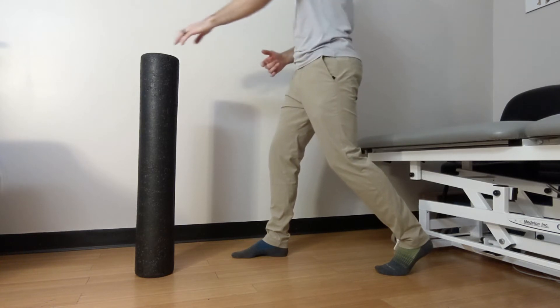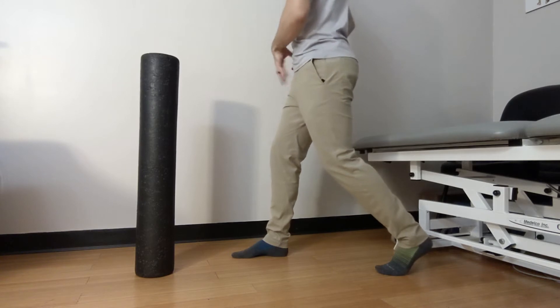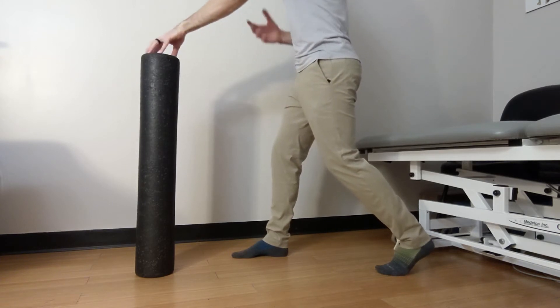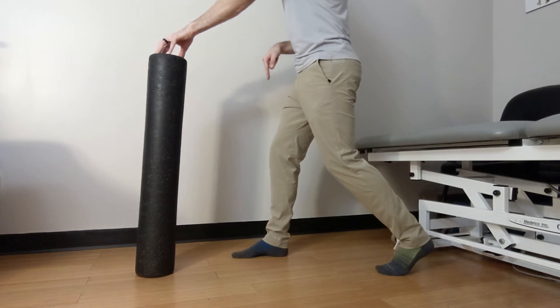From here we're going to reach the opposite arm forward, which is going to turn us a little bit towards the working leg, and we're going to pull ourselves forward keeping the weight on the heel.